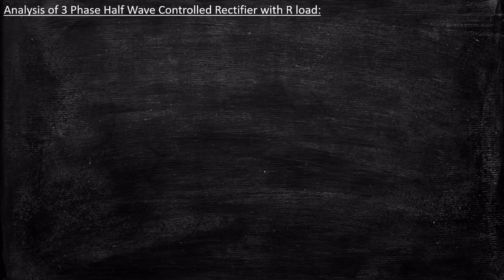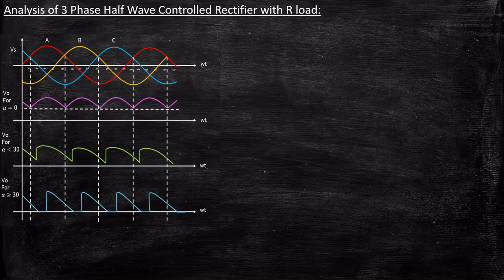Hello everyone. In this video we will be taking a look at analysis of three-phase half-wave controlled rectifier with R-load. This is the waveform that we had seen in our previous video where we understood the operation and the waveform of this particular half-wave controlled rectifier with R-load for three-phase circuit. Now we are going to mainly look at the analysis part where we will be deriving the expression for average output voltage and RMS output voltage.